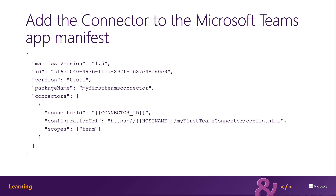The last step to make your connector available to Microsoft Teams is to include it in the app's manifest. The manifest file shouldn't have any properties for configurable tabs, static tabs, bots, or compose extensions. If those are present in your app manifest, make sure you remove them — don't just make them empty collections.